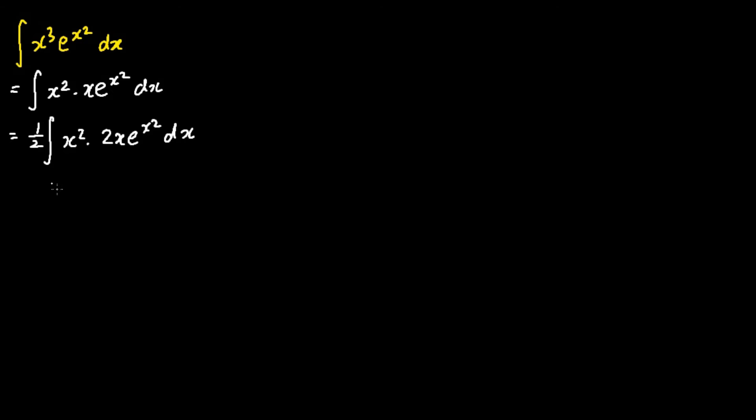The next step we're going to do is apply the technique called integration by parts. The integration by parts formula tells us that if I define a term as u and another term as dv, this equals uv minus the integral of v du.